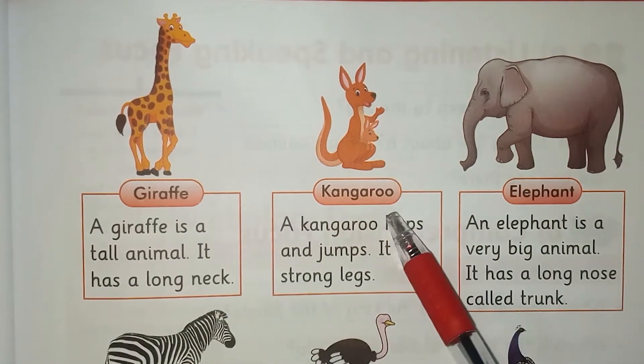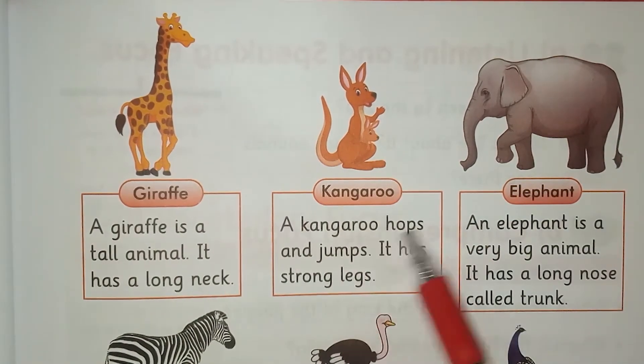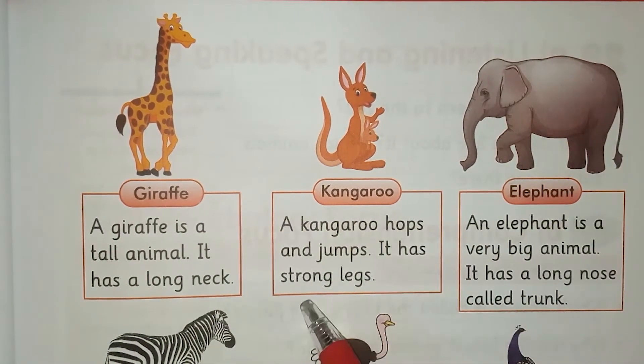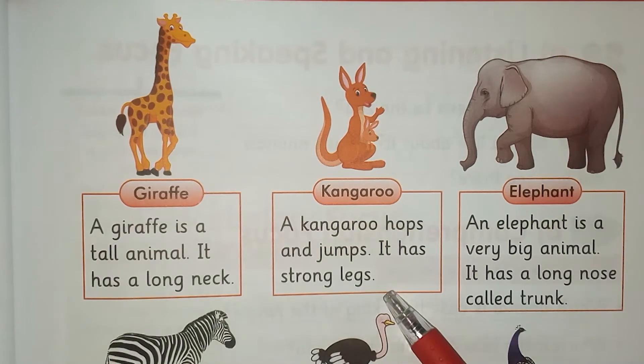Yeh kangaroo hai. A kangaroo hops and jumps. It has strong legs. Kangaroo hops and chhalaang lagata hai. Iske tang mazboot hain.